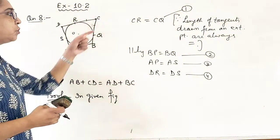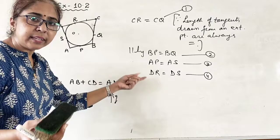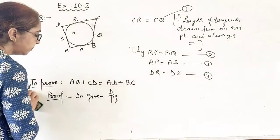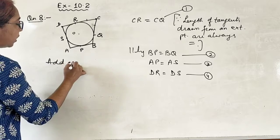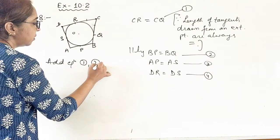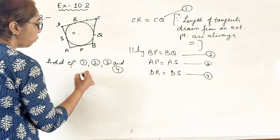Now what do you have to do? We just have to add these 4 equations. And that's it. So I am adding equation number, add equation number 1, 2, 3 and 4.